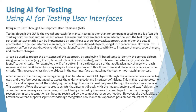However, this approach suffers several drawbacks with object identification, including sensitivity to interface changes, code changes, and platform changes. When it comes to identification of objects, some capabilities are very limited and do not get into all the details of object identification. When the interface changes, the code has to be highly maintained; code changes will also trigger the need to update your script, and migration may require updates too.